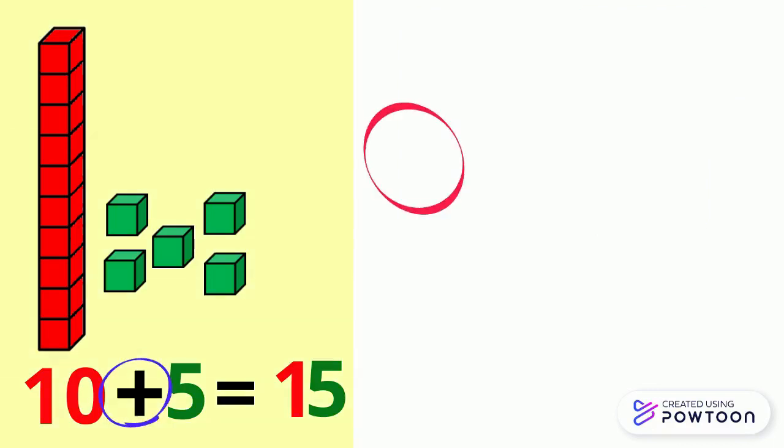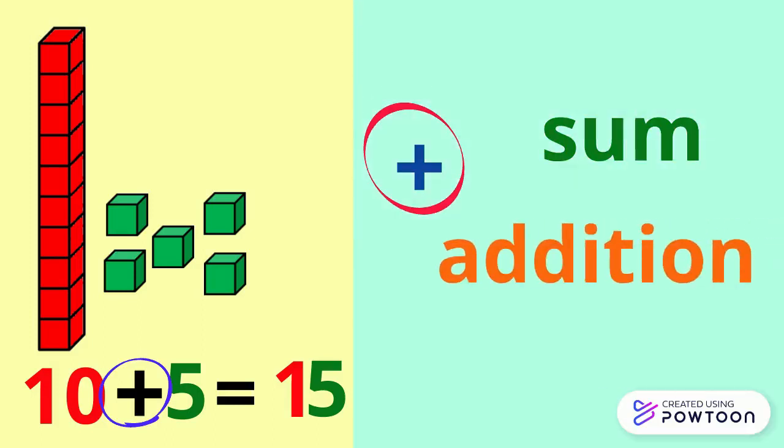The equation ten plus five is the sum. The sum of two numbers is the result obtained from the addition of two numbers. So, the sum of ten and five is fifteen.